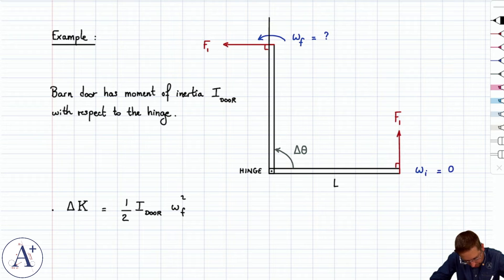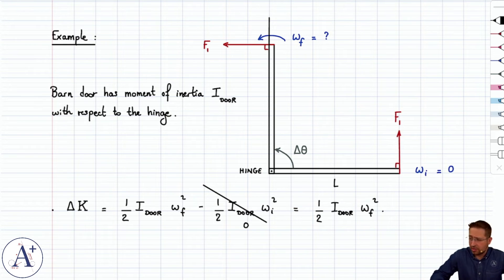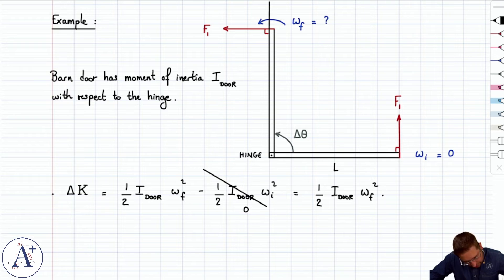omega final squared, minus one-half I door omega initial squared, which is actually zero because the door starts at rest, and so you just have one-half I door omega final squared. That's your change in rotational kinetic energy. And we need to set that equal to the work net.